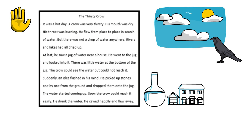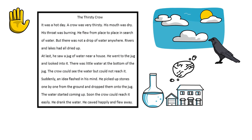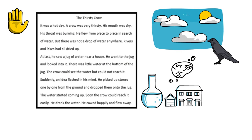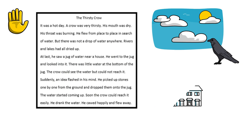He went to the jug and looked into it. There was little water at the bottom of the jug — the crow could see the water but could not reach it. Suddenly, an idea flashed in his mind. He picked up stones one by one from the ground and dropped them into the jug. The water started coming up. Soon the crow could reach it easily. He drank the water, called out happily, and flew away.